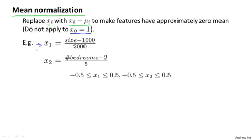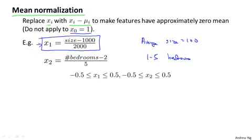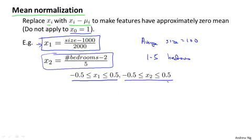But concretely, for other features, if the range of sizes of houses takes on values between 0 to 2,000, and if the average size of a house is equal to 1,000, then you might use this formula: set the feature x1 to be size minus the average value divided by 2,000. And similarly, if on average your houses have 1 to 5 bedrooms, and if on average a house has, say, 2 bedrooms, then you might use this formula to mean normalize your second feature x2. In both of these cases, you therefore wind up with features x1 and x2 that can take on values roughly between -0.5 and positive 0.5.